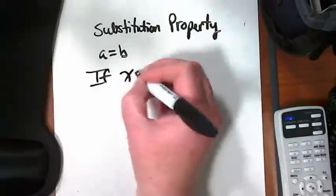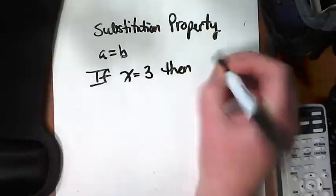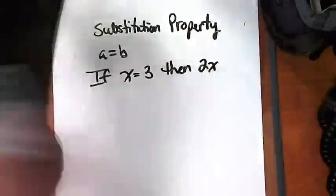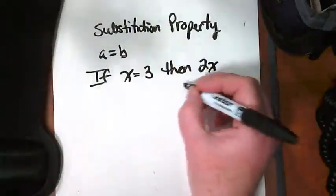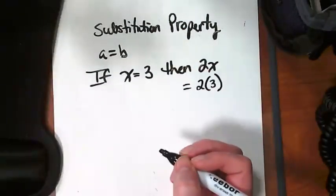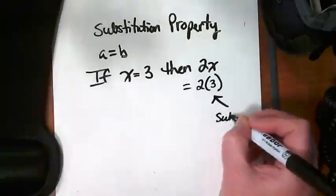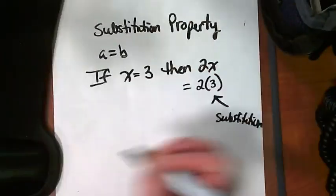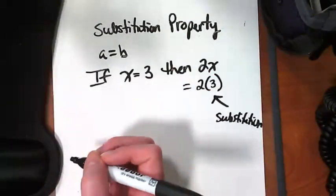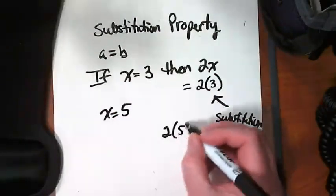I think the next part of the page where it says if we have x equals 3, then 2x can be rewritten as 2 times 3, because I substituted in a 3 where the x was. That's all this means. This right here is the substitution part. If instead I said that x was equal to 5, then I would rewrite this as 2 times 5.